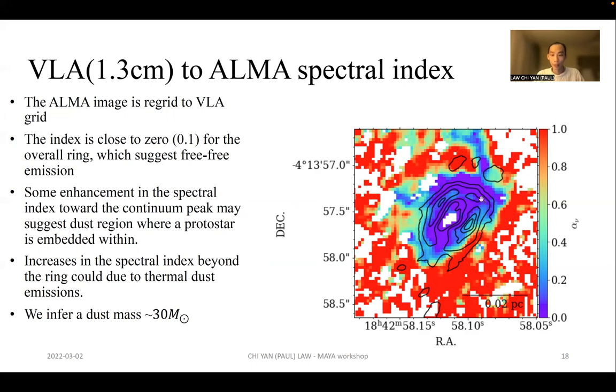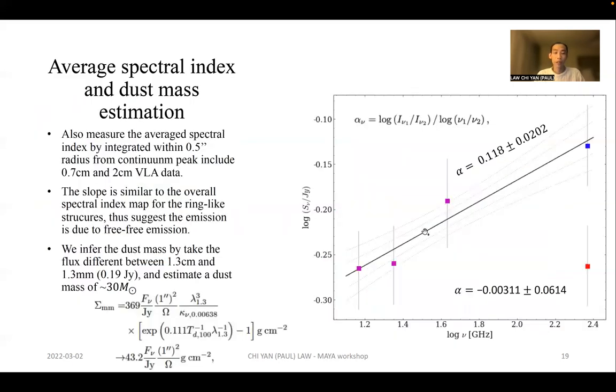This allows us to argue that these emissions are mainly due to free-free emissions. But we also see some enhancement in the spectral index towards the continuum peak, which may hint that there may be a dust region where the embedded protostar resides. The increase of this spectral index beyond the ring-like structure may be suggesting a dusty envelope, but the low signal-to-noise does not allow us to have solid interpretations. We also do the average spectral index by taking the integrated flux within a 0.5 arcsecond radius from the continuum peak. We include two other VLA data at different wavelengths. Here we report the spectral energy distribution of the average flux. We do a fit and find a spectral index of 0.11, which is consistent with the pixel-by-pixel analysis. Therefore, emissions are largely due to free-free emissions. We also infer the dust mass by taking the difference between the 1.3 centimeter and 1.3 millimeter flux and using this equation, we get a dust mass of around 30 solar masses.